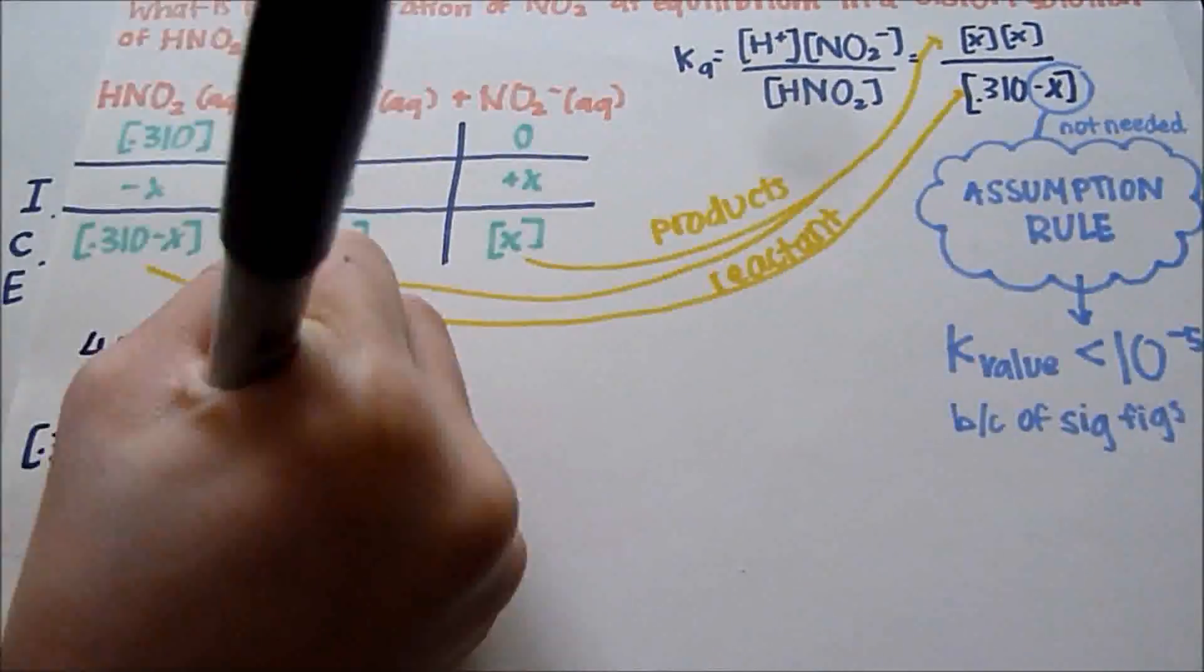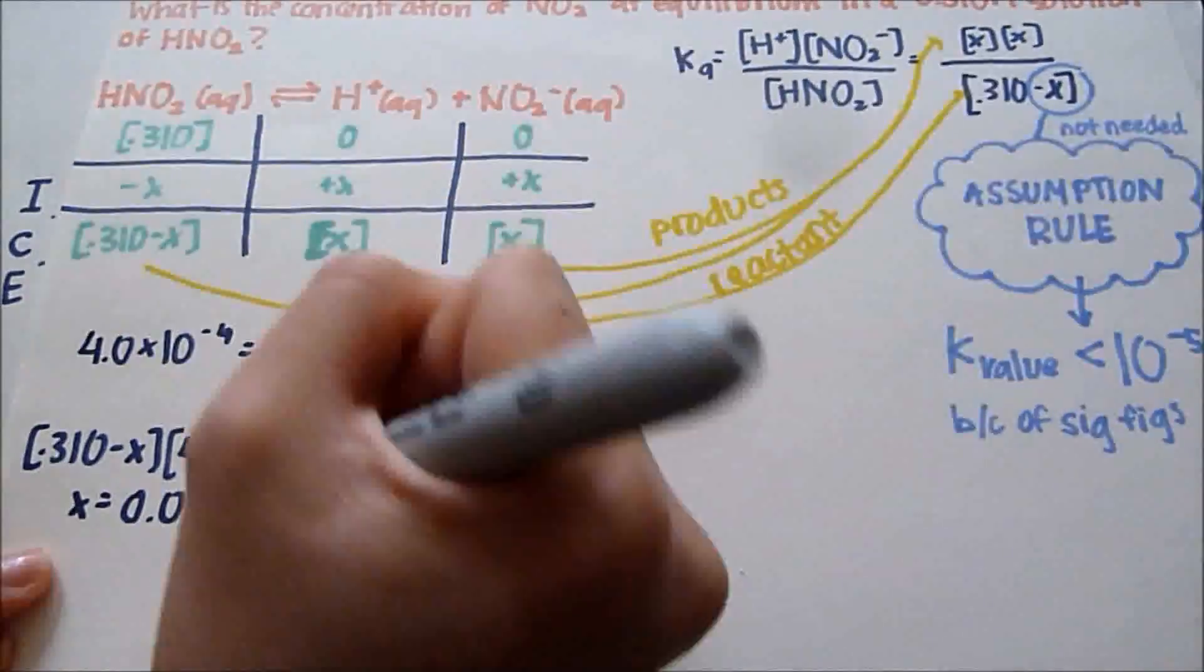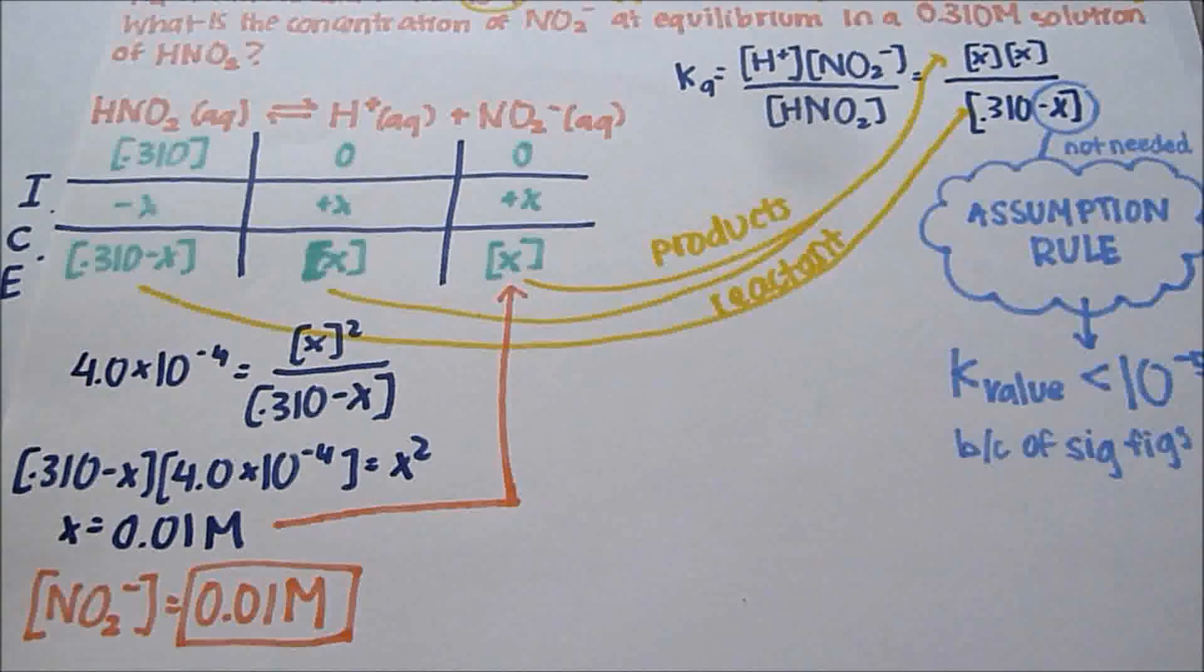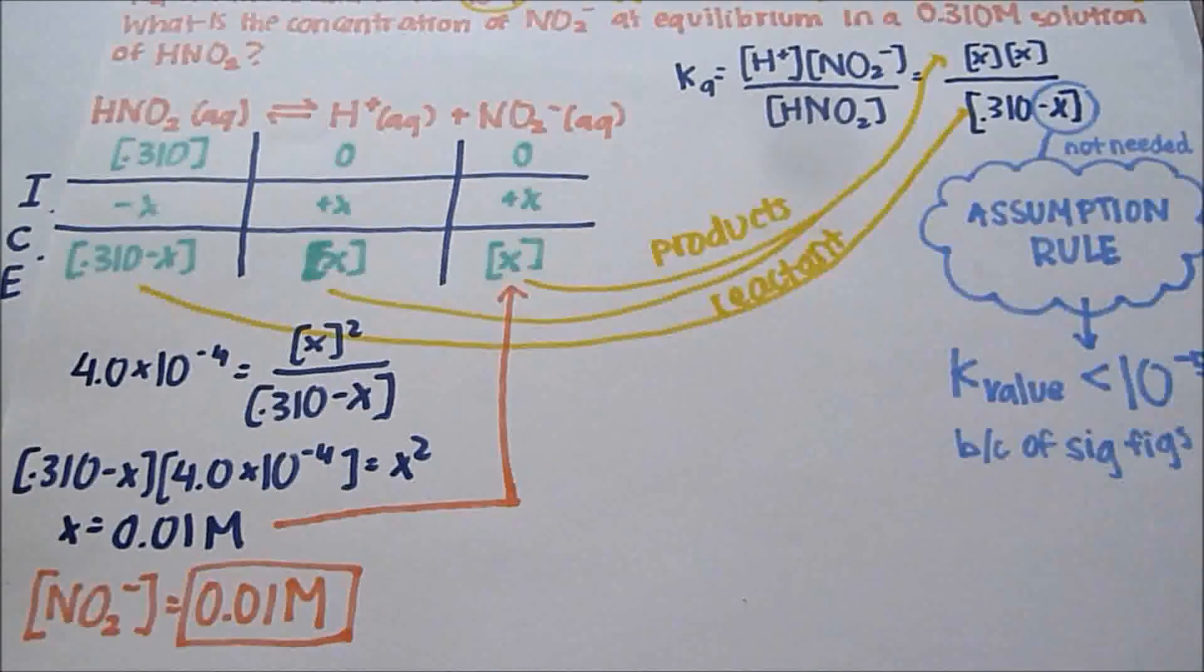So, now we're going to simplify it and do a bit of math and we're going to keep the X in. And we're going to find that X equals 0.01 molarity. And since X is equal to NO2 minus, then NO2 minus also equals 0.01 molarity.